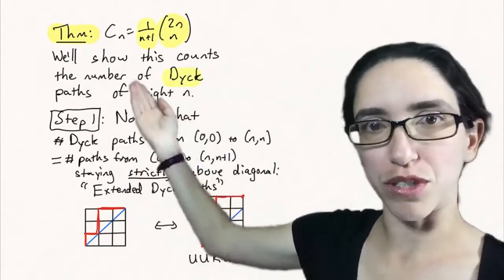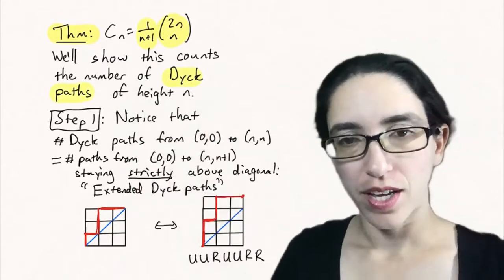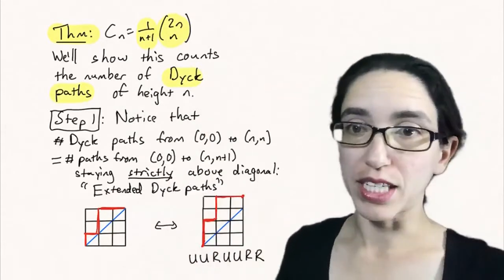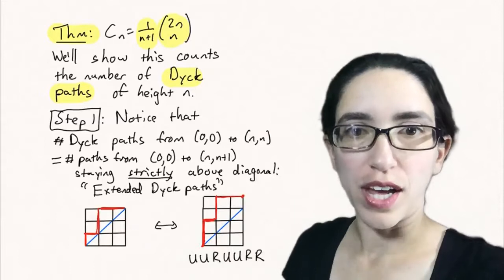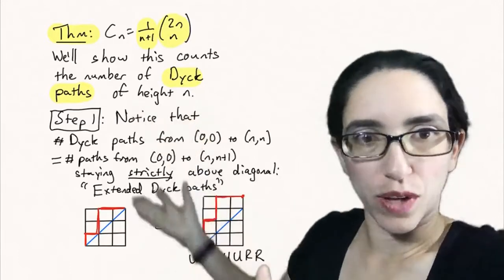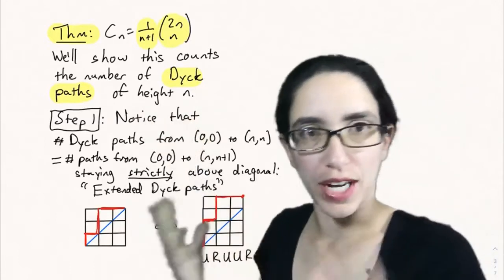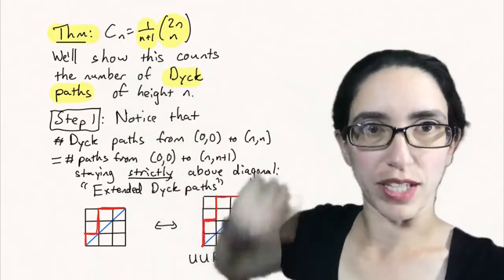So instead we'll do a combinatorial proof this time. We'll show that this counts the number of Dyck paths of height n. This is a quite involved proof. It's not in the textbook, but I thought I would put it in the video as the outline of how the proof would go to give you an idea of where this formula comes from.